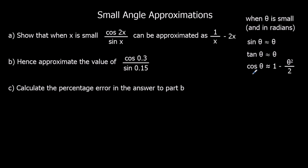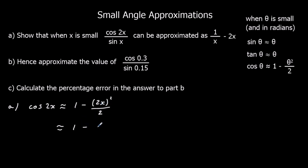We've got a question here: show that when x is small, cos 2x over sin x can be approximated as 1 over x minus 2x. So when x is small, we can say that cos 2x is approximately equal to 1 minus (2x) squared over 2 — just substituting theta with 2x. Simplifying: 1 minus 4x squared over 2, and half of 4x squared is 2x squared. So cos 2x is approximately equal to 1 minus 2x squared.